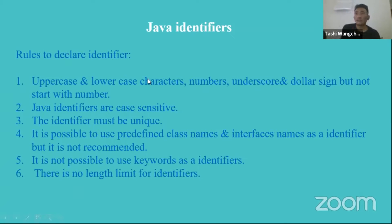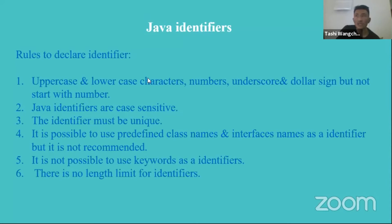What is an identifier in Java? Identifiers are nothing but a name in Java. It is the name given when you are naming a class, method, or variable. Identifiers are called names in Java — every name in Java is called an identifier.